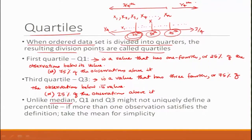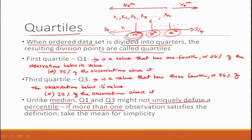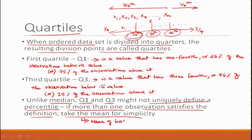Unlike the median, which is exactly a middle point, Q1 and Q3 might not uniquely define a single percentile. If more than one observation satisfies the definition, we take the mean of both observations.